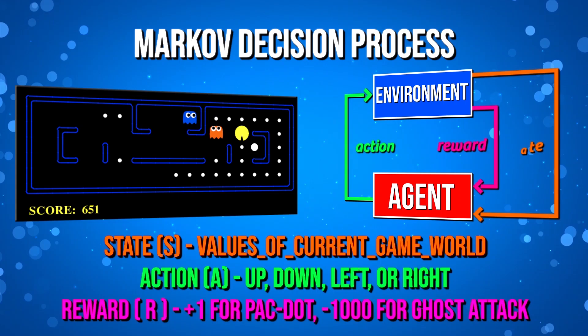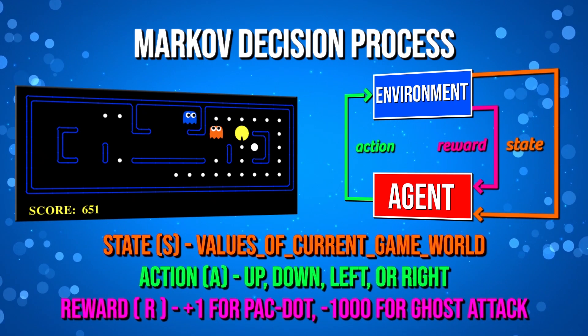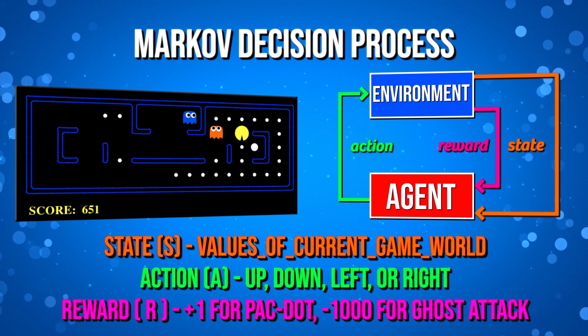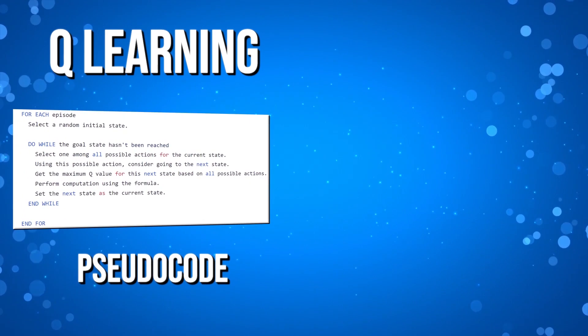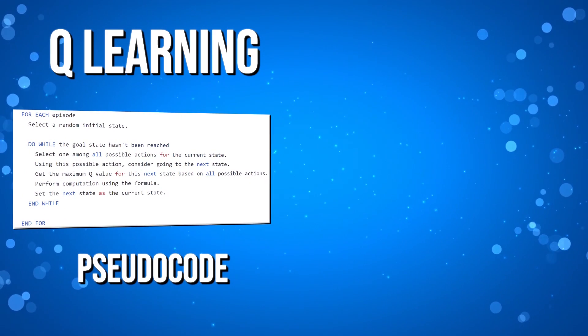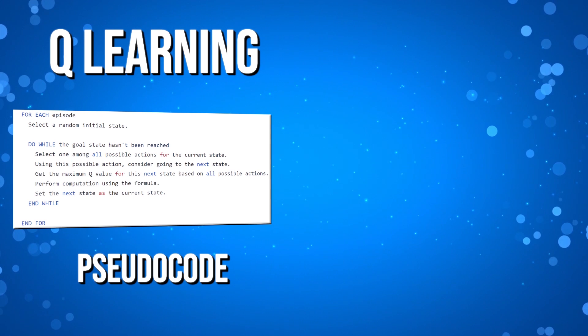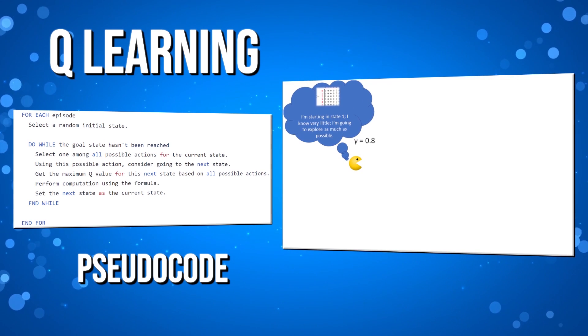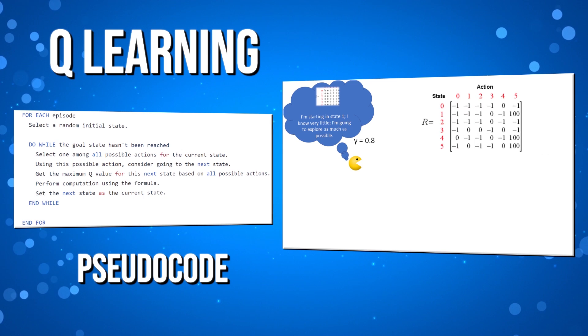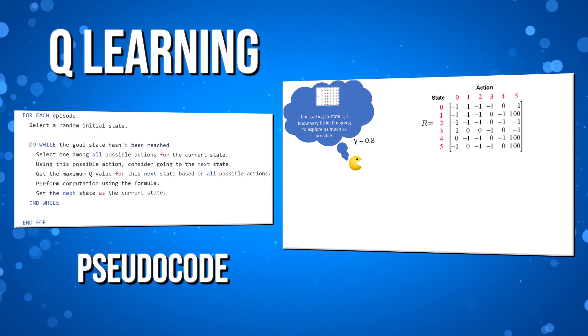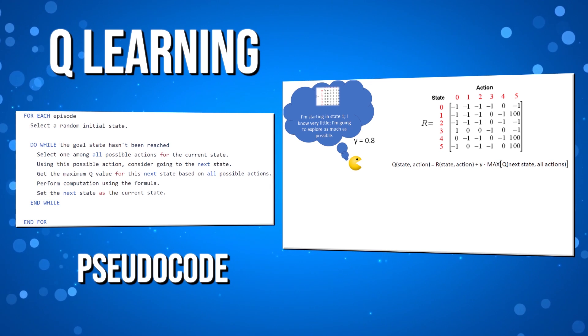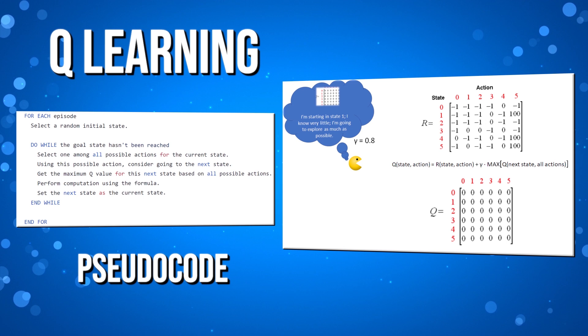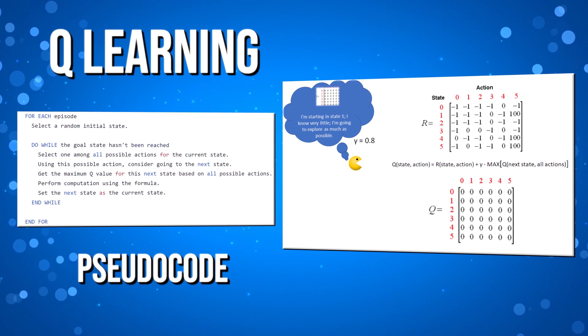We know that eating Pac-Dots gives us positive rewards, and getting eaten by a ghost gives us a negative reward, and a possible temper tantrum, which we want to avoid. Through trial and error, our agent will accumulate knowledge of the environment through state action pairs, meaning it can tell if there would be a positive or negative reward given a state action pair. We can represent this using the Q function, where Q stands for quality, as in it assesses the quality of a given state action pair. We can actually learn what the optimal Q value will be at any given point, and this is called Q learning.